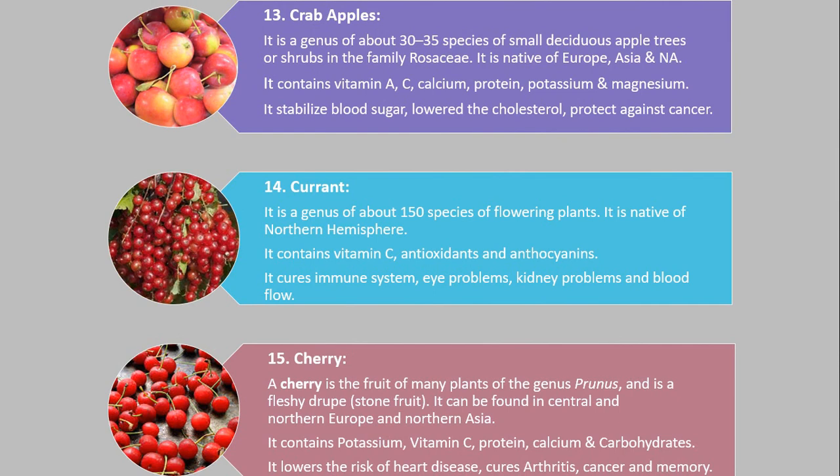Number 13. Crab Apples. It is a genus of about 30 to 35 species of small deciduous apple trees or shrubs in the family Rosaceae. It is native to Europe, Asia and the Nile region. It contains vitamin A, C, calcium, protein, potassium and magnesium. It stabilizes blood sugar, lowers cholesterol, and protects against cancer.